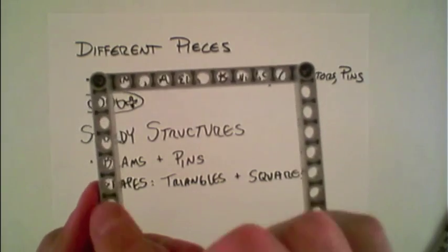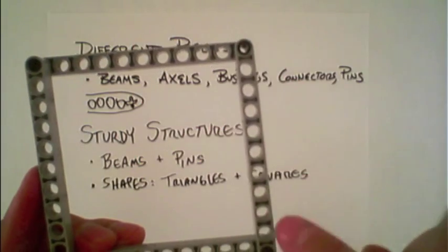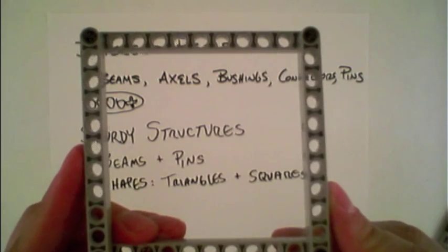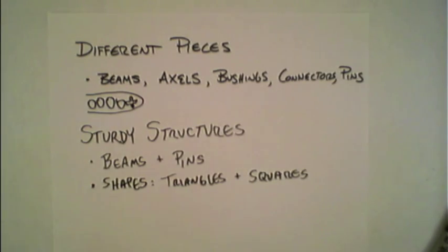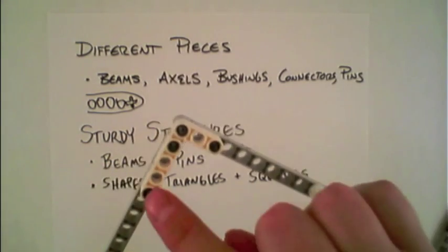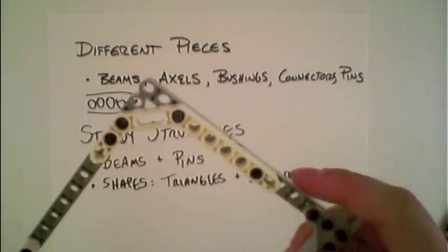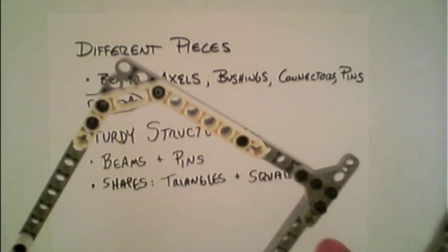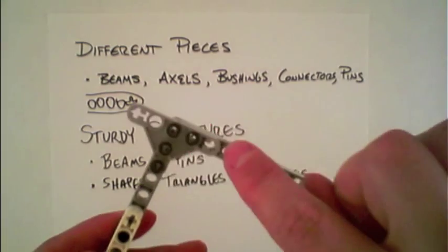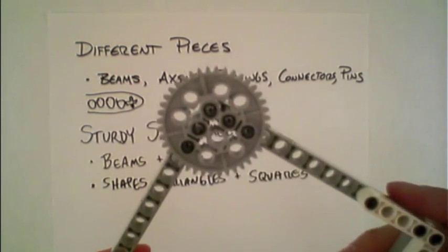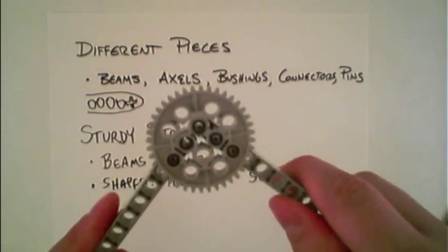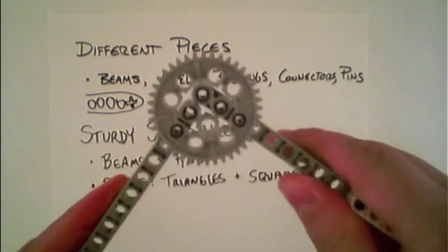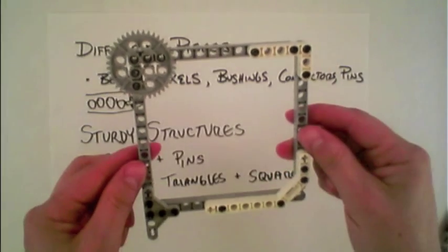However, it's possible to reinforce these corners to ensure that it stays at the desired 90 degrees. Here I've done that using a variety of different techniques. On this corner, an L-shaped beam, here an angled connector, the T-shaped piece here, and even using, for instance, a gear with multiple pins creates these structurally sound 90-degree angles for squares.